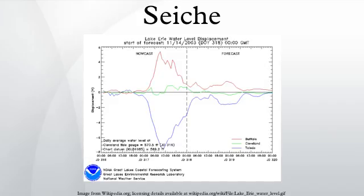The same storm system that caused the 1995 seiche on Lake Superior produced a similar effect in Lake Huron, in which the water level at Port Huron changed by 6 feet over 2 hours. On Lake Michigan, eight fishermen were swept away from piers at Montrose and North Avenue beaches and drowned when a 10-foot seiche hit the Chicago waterfront on June 26, 1954. Lakes in seismically active areas, such as Lake Tahoe in California-Nevada, are significantly at risk from seiches. Geological evidence indicates that the shores of Lake Tahoe may have been hit by seiches and tsunamis as much as 10 meters high in prehistoric times, and local researchers have called for the risk to be factored into emergency plans for the region.